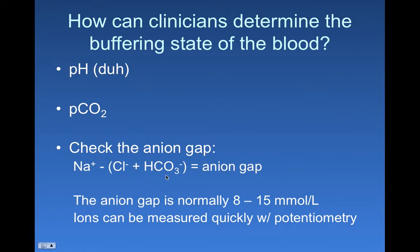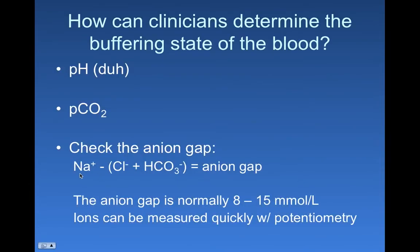Let's think about what would happen to the anion gap. If someone has a metabolic issue causing increased lactic acid or other acids from the citric acid cycle, that acid insult would be acted upon by bicarbonate in the buffering system, causing bicarbonate levels to decrease. If bicarbonate levels are decreasing, the subtracted value becomes smaller, so the overall anion gap increases. The anion gap has a normal range; if there's a metabolic acid, the gap increases, telling the clinician that bicarbonate levels are likely lower. Elevated chloride can also indicate kidney issues.